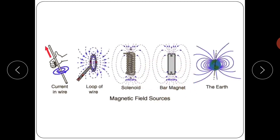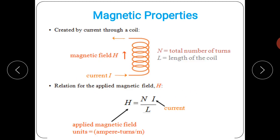Magnetic properties are created by current through a coil, where N is the number of turns and L is the length of the coil. The magnetic field intensity H is given by the relation: H equals N times I divided by L.